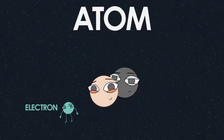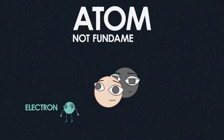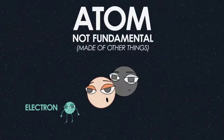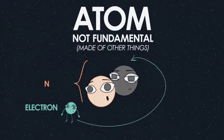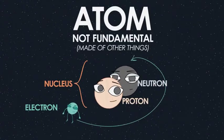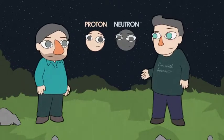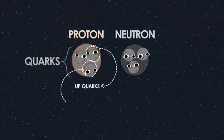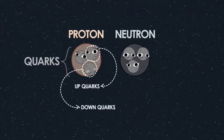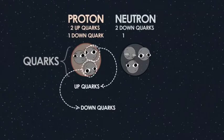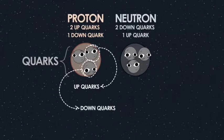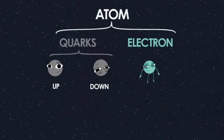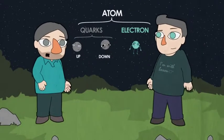But wait — atoms contain electrons, so you can actually cut an atom up into something smaller. Atoms are not fundamental; they're made of other things. Atoms are made of electrons, which go around a nucleus, and the nucleus is made of protons and neutrons. Protons and neutrons are not fundamental either — they're made of quarks, specifically two different kinds: up quarks and down quarks. So atoms are made of electrons and quarks.